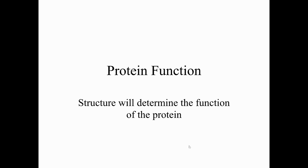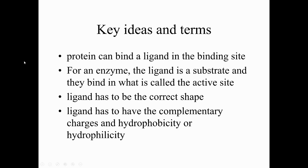We're going to talk about protein function using the example of hemoglobin, which is a transport protein. This example shows how we get oxygen from our lungs into our tissues, and it brings together many ideas from this chapter. A key concept is that a protein can bind a ligand at a binding site. In the next chapter on enzymes, the ligand is called a substrate and binds at an active site. The ligand must be the correct shape.